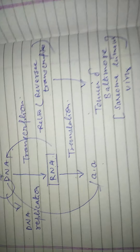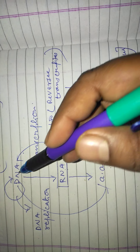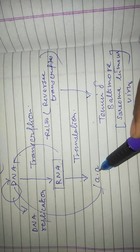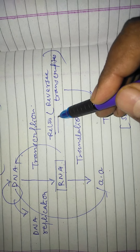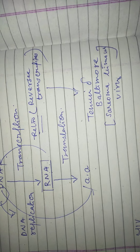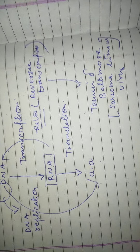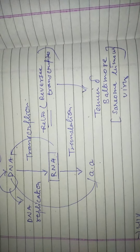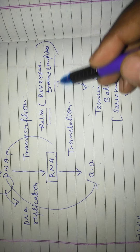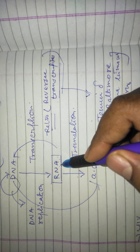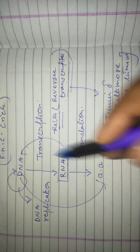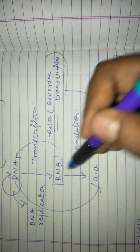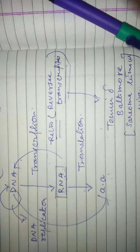So generally, the Central Dogma describes the flow: DNA to RNA to amino acid. Some retroviruses, such as HIV, contain the reverse transcriptase enzyme and are known as retroviruses. This enzyme synthesizes DNA from RNA. This is the overall flow of protein synthesis inside the ribosome. Thank you.